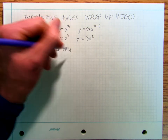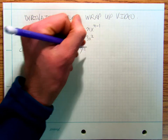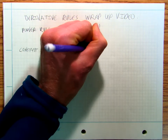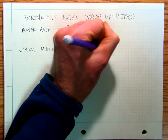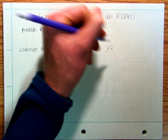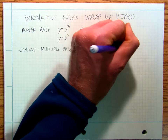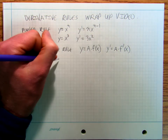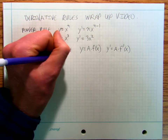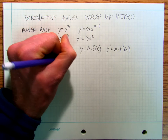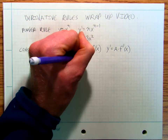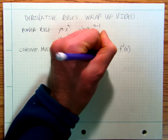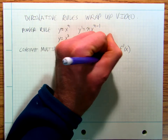Constant multiple rule: y equals a times f of x, y prime is equal to a times f prime of x. So y equals five x cubed, y prime is equal to five times three x squared, which equals fifteen x squared.